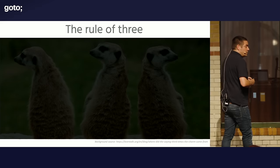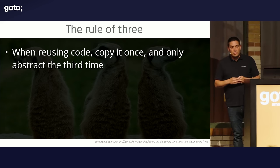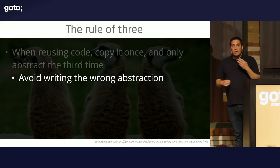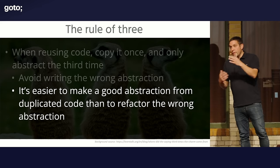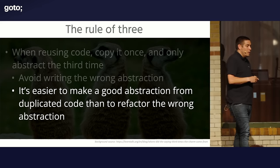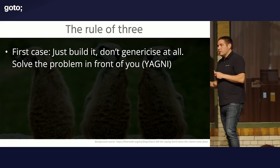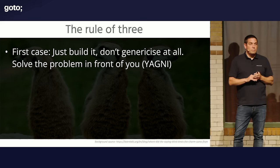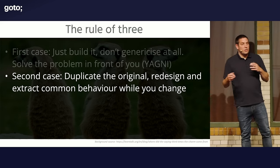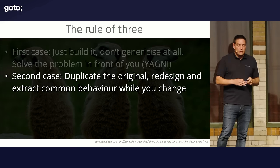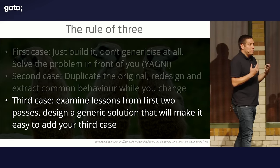The rule of three is a simple rule. When you're reusing code, you copy it once — that's the second time you're using it. You only abstract the third time you have this use case. This helps you avoid writing the wrong abstraction. It's easier to make a good abstraction from duplicated code than to make a wrong extraction and then try to refactor it. Three strikes and you refactor: first use case — just build it, solve the problem in front of you. Second case — duplicate the original, redesign a bit, maybe extract common behavior but keep it local in both places. Third case — look at lessons from your first two passes, then design a generic solution that fits all three cases.